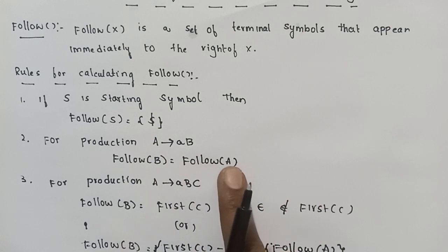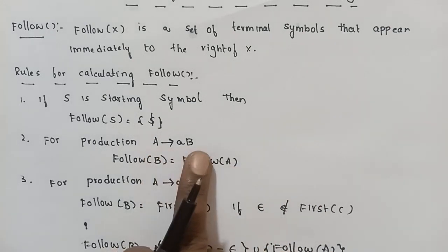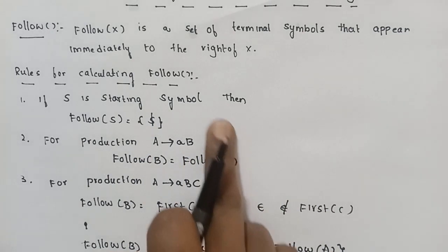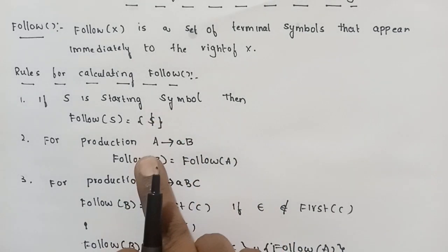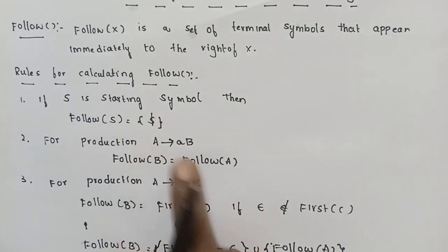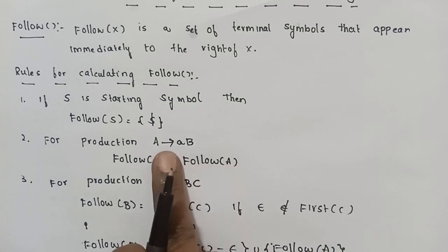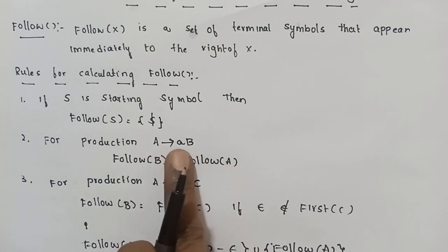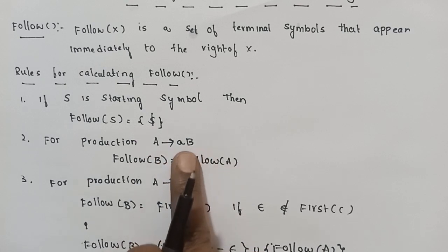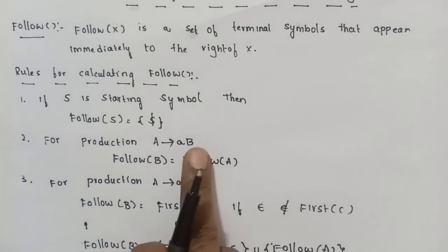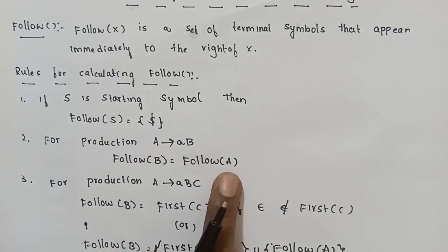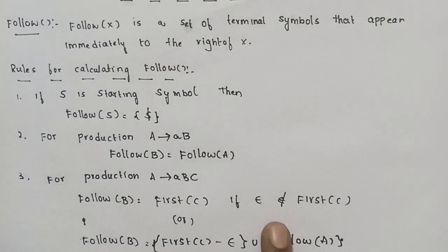If there is no symbol to the right of B in the production, then FOLLOW of B includes FOLLOW of A. So if B appears at the end of a production, the FOLLOW of the left-hand side non-terminal A is added to FOLLOW of B.